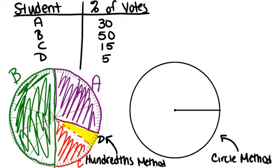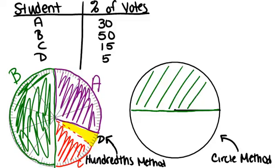If you wanted to do the circle method, you might start by thinking: student B got 50%, so that's 180 degrees or half the circle. I might do student B first, draw in a diameter, and know that half the circle, 180 degrees, is student B.